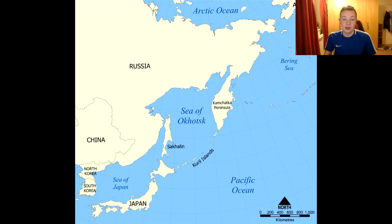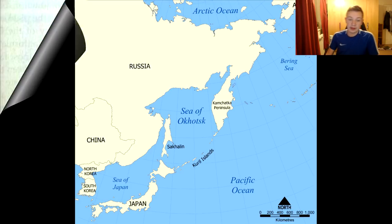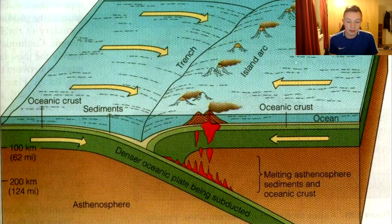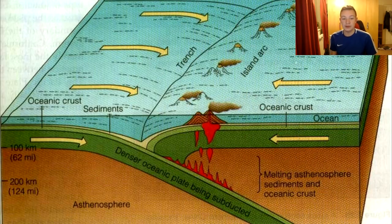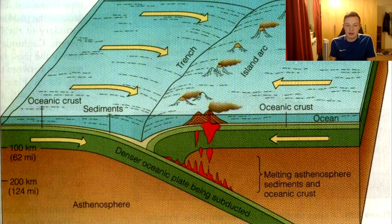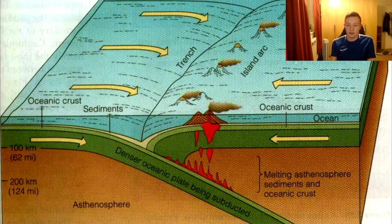I will now be talking about how these volcanic island arcs are formed. As you can see from this diagram, two oceanic plates meet and then one is subducted under the other.